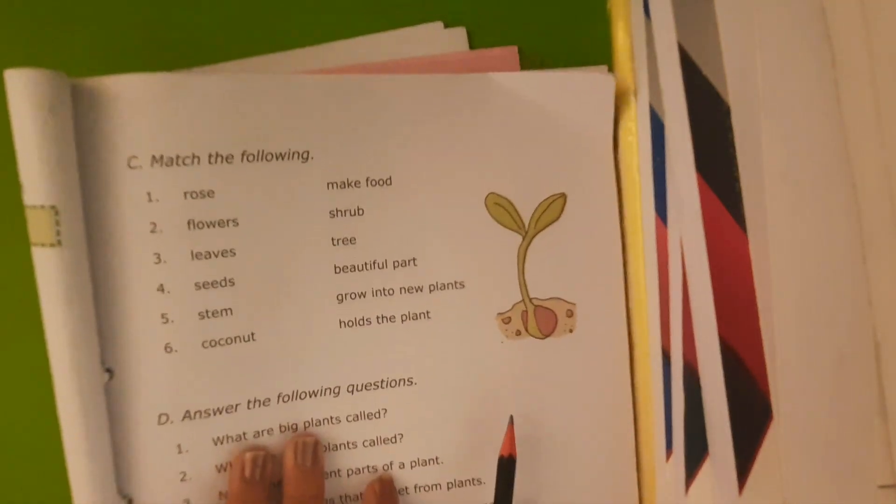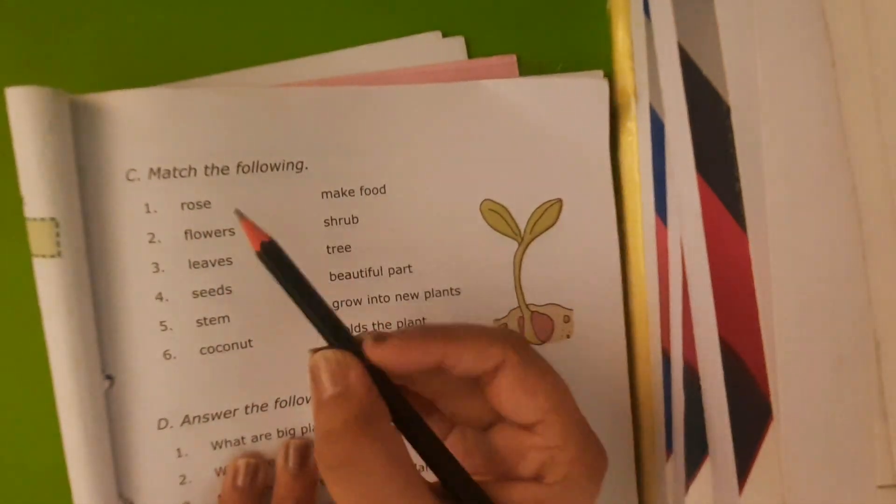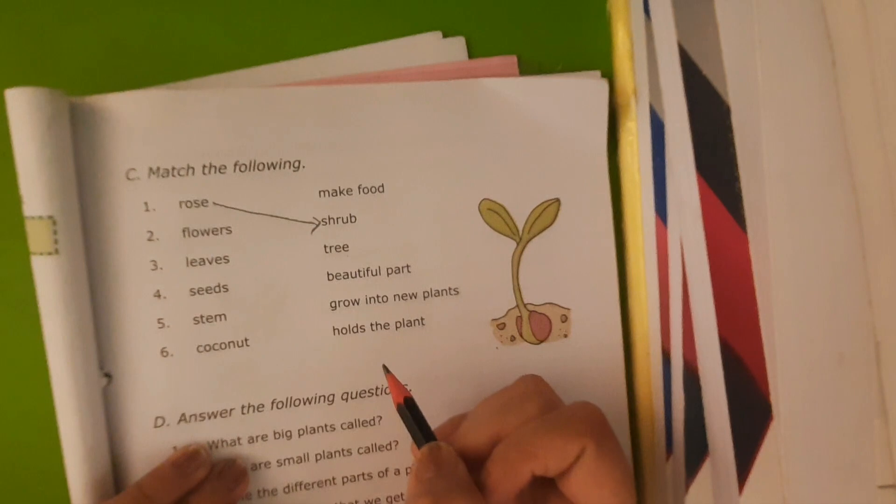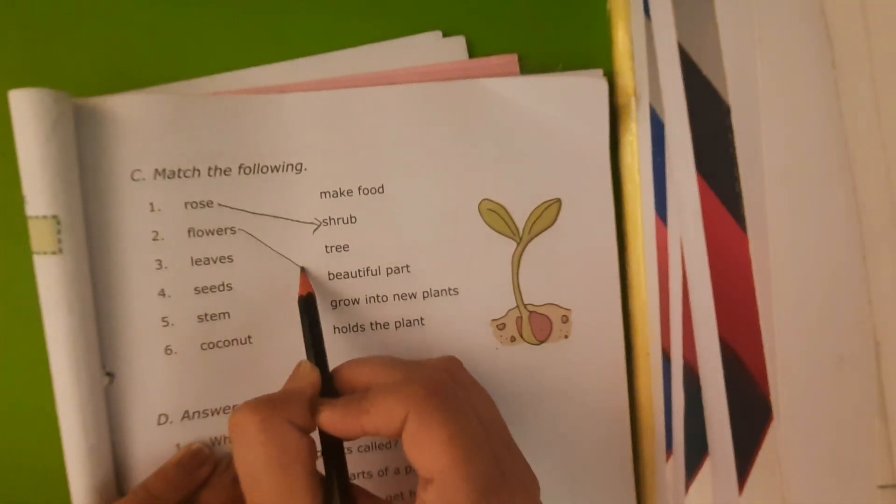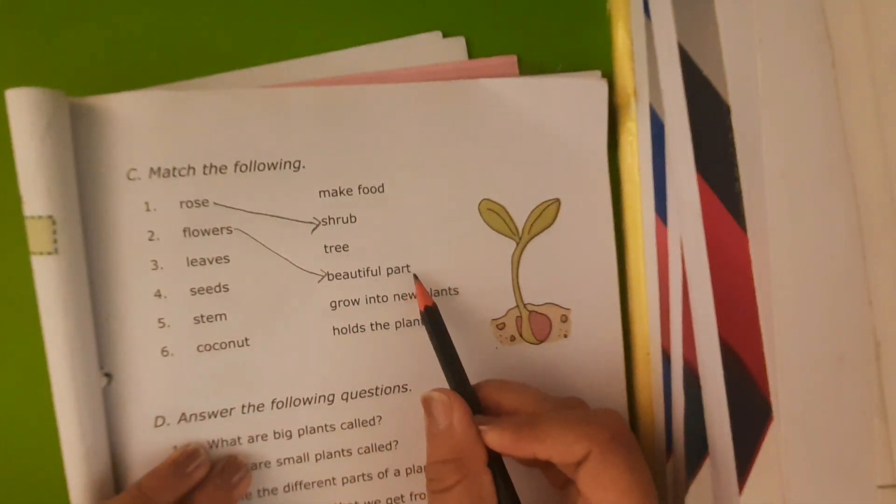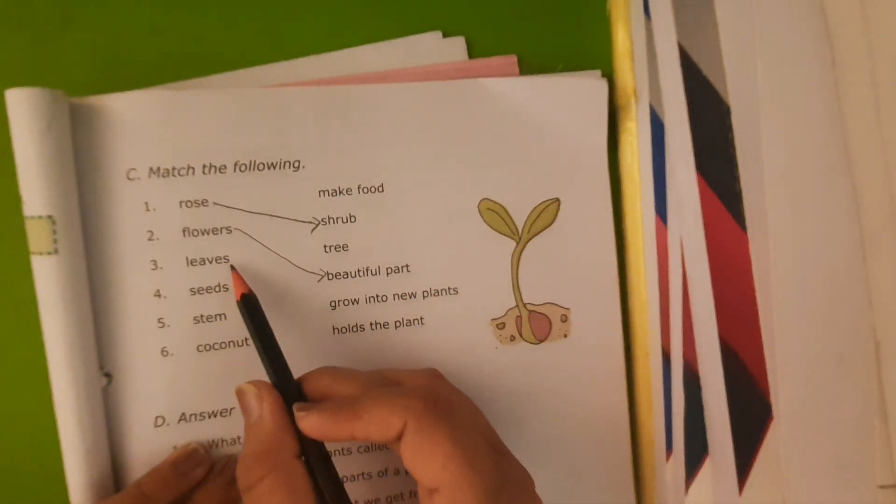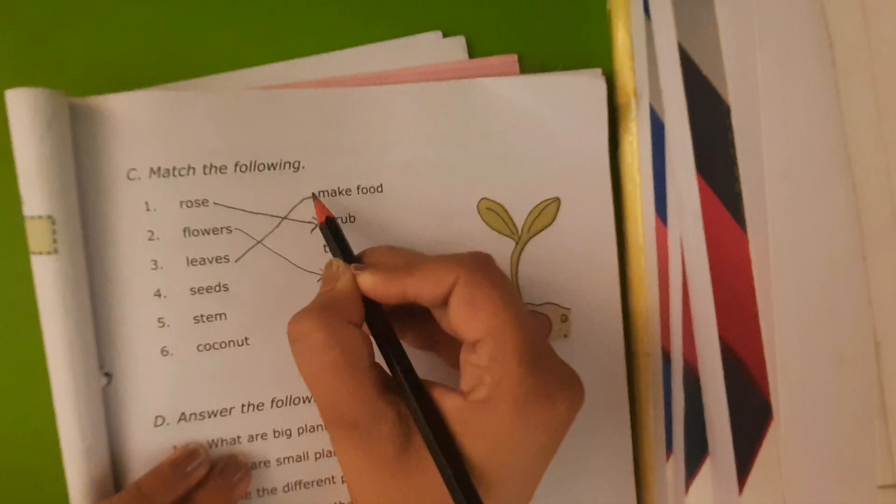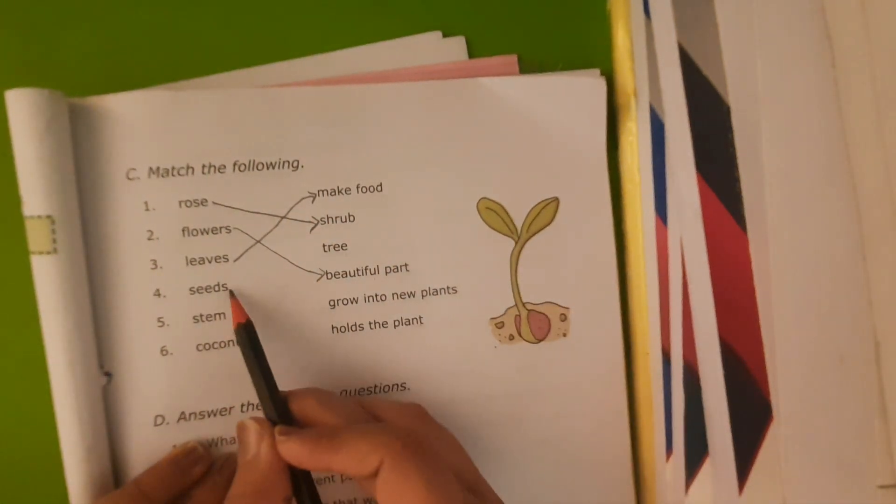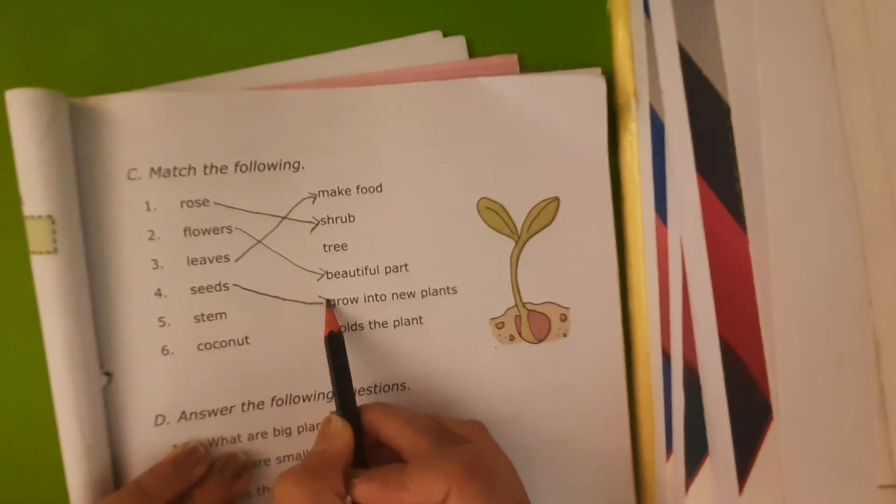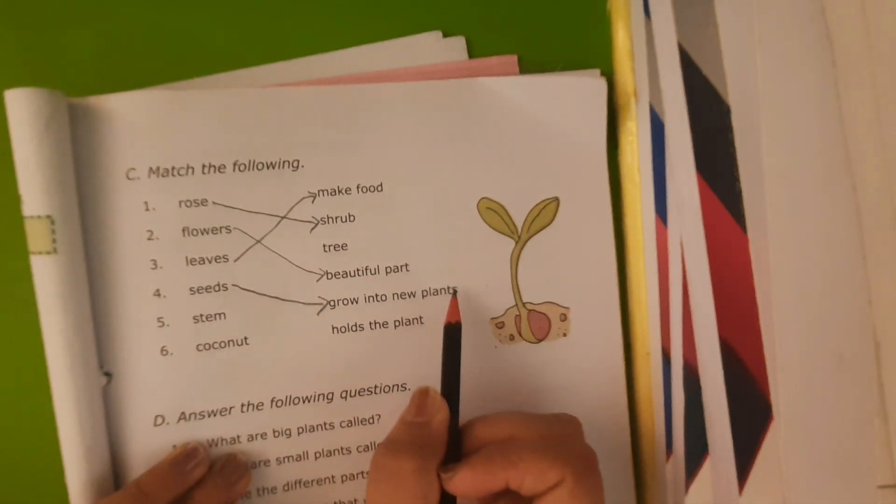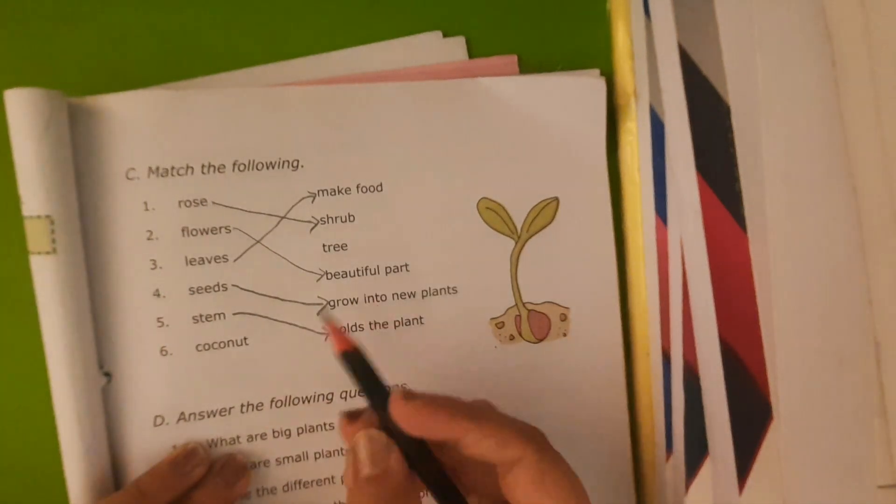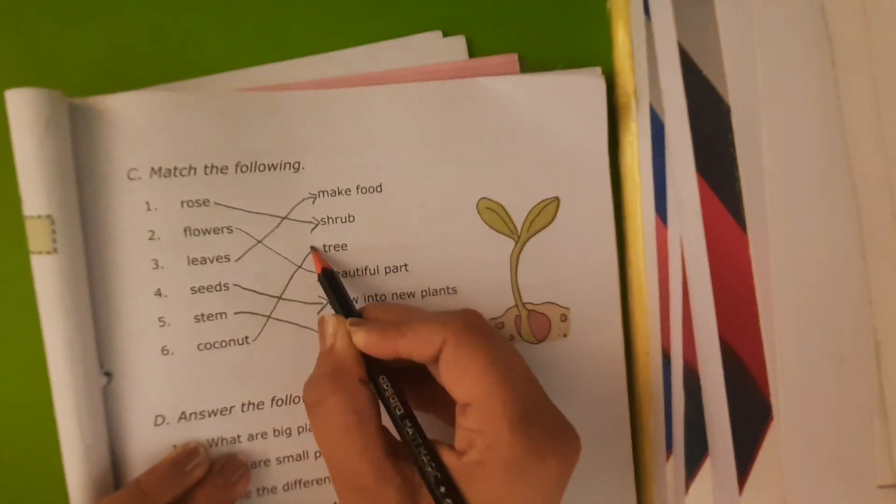So rose, what is a rose? Rose is an example of shrub. Flowers are beautiful parts of a plant. Leaves make food for a plant. Seeds grow into a new plant. Stem holds the plant. Coconut is an example of tree. So here students you have to match one column with another column.